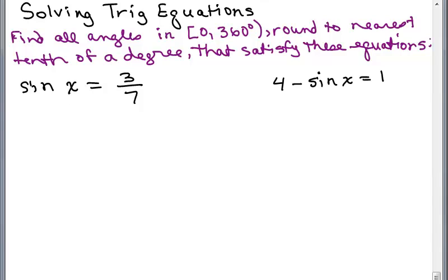We're going to be solving these two trig equations on this video. Find all angles in the interval 0 to 360 degrees, rounded to the nearest tenth of a degree, that satisfy these equations. So we have two separate problems.